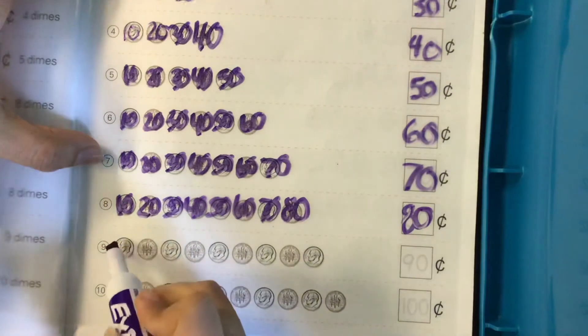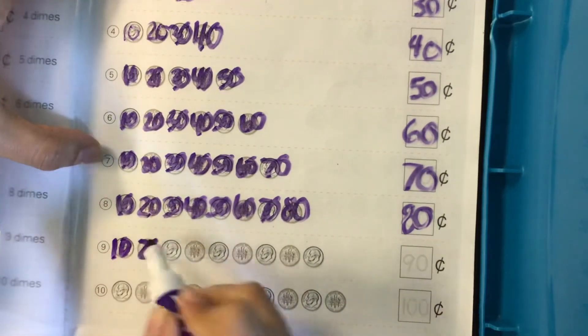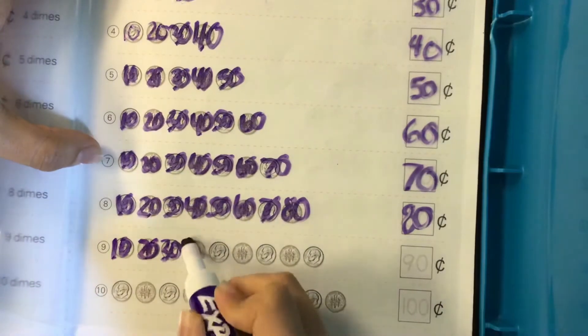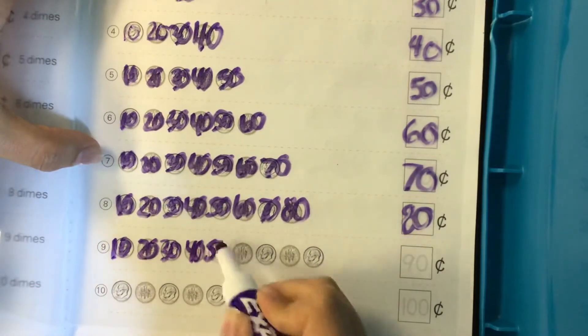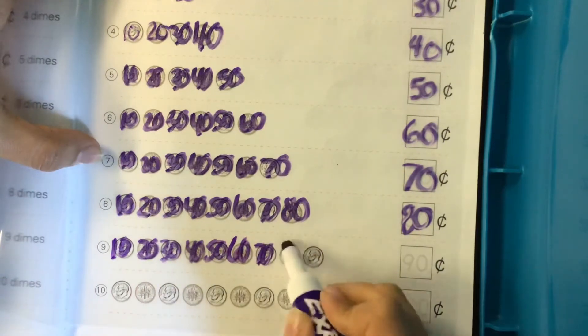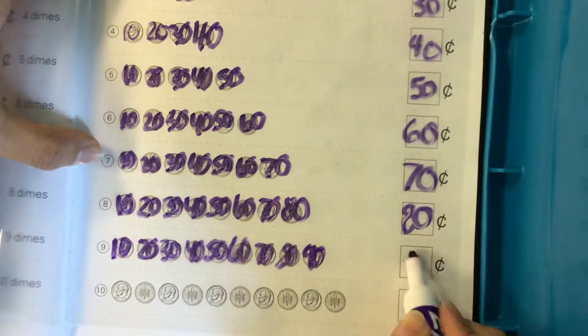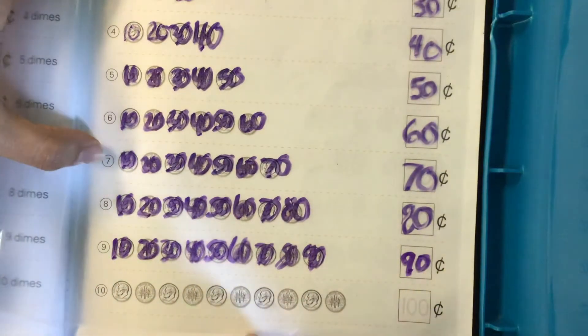Row nine. Let's skip count together. Ten, twenty, thirty, forty, fifty, sixty, seventy, eighty, ninety. There are ninety cents in row nine.